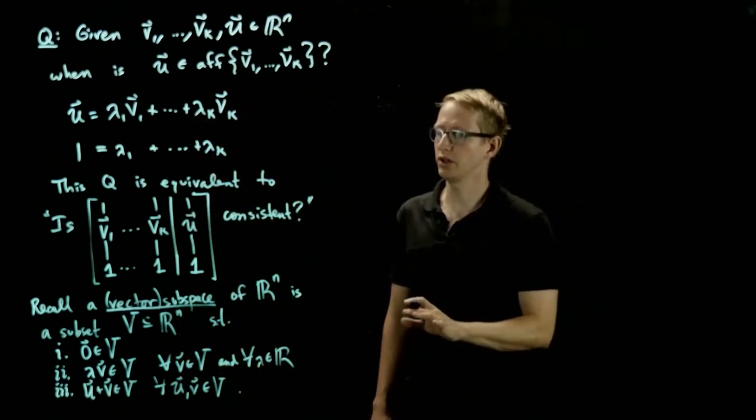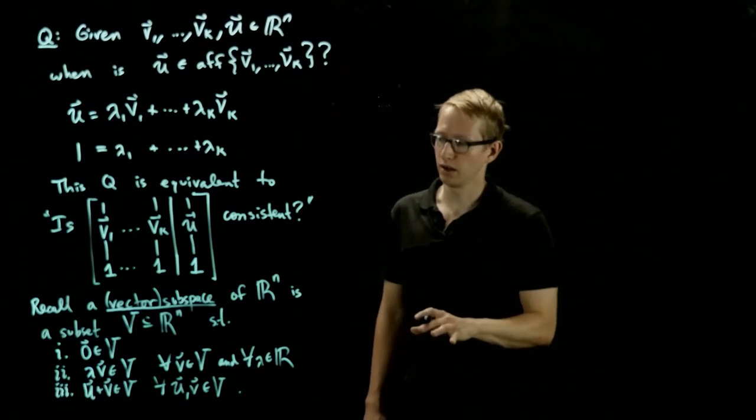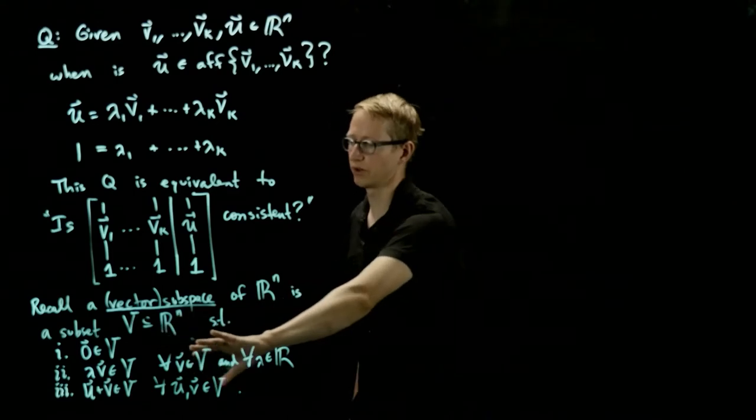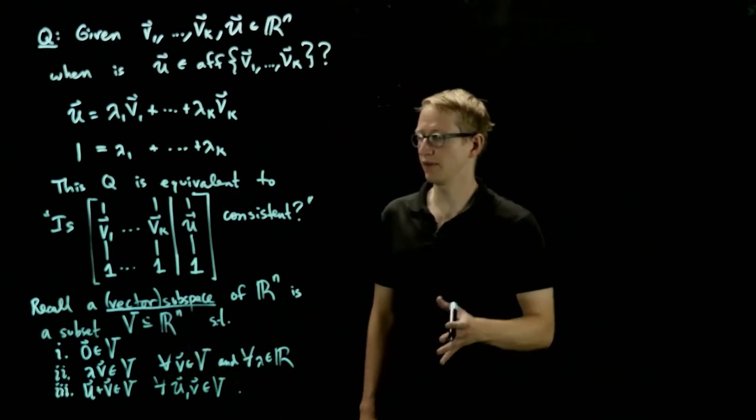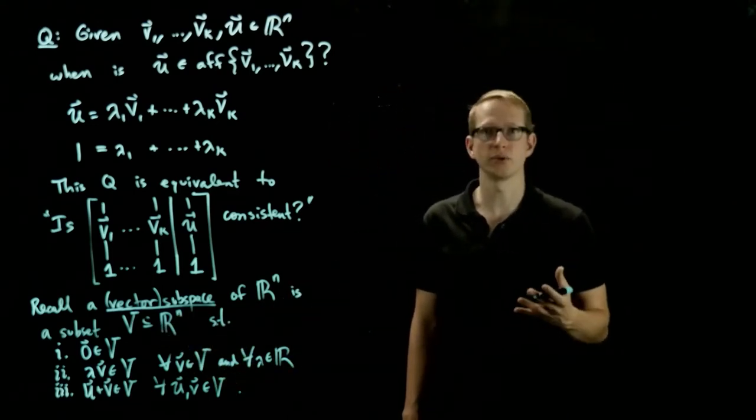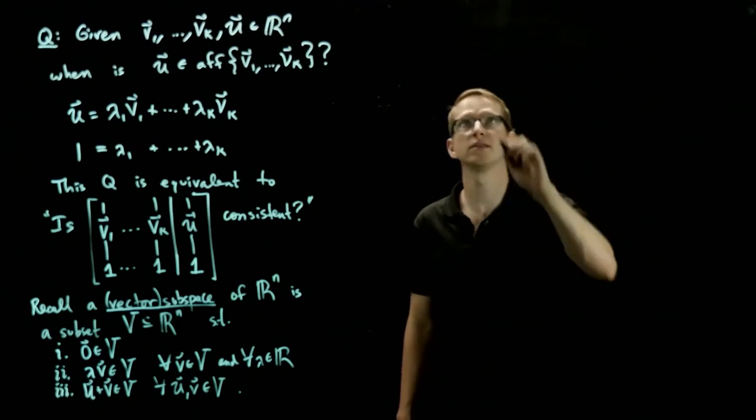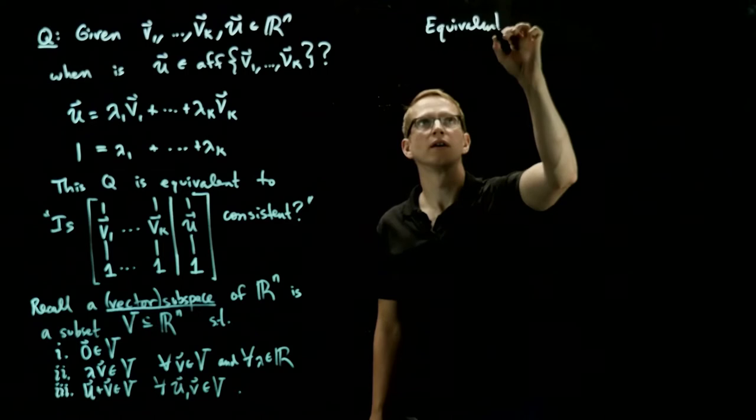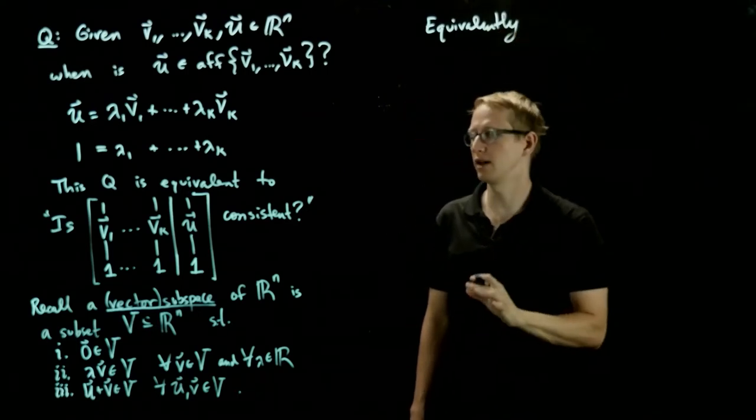Now this definition of a vector space is a little bit algebraic. It's telling us when certain vectors are in V. And we can have a little bit more of a geometric interpretation of what a vector subspace is by using affine combinations.